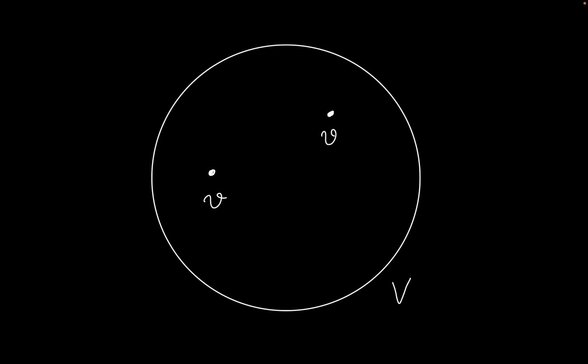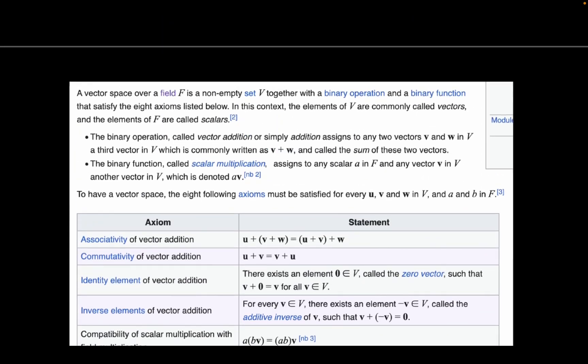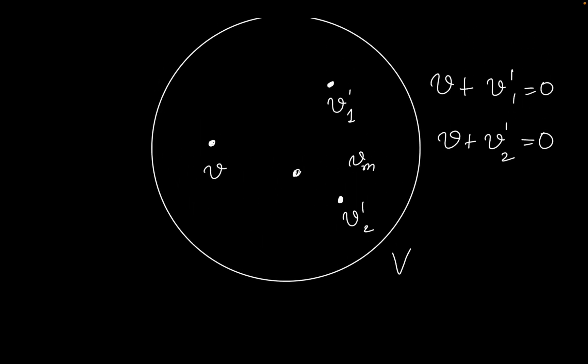Typically we don't call it v', we call it negative v. So v plus negative v equals zero — negative v is treated as a single symbol. What defines the vector space is the existence of such an additive inverse. It guarantees there is at least one additive inverse, but it doesn't directly say how many there are. What's stopping us from considering two inverses, v'₁ and v'₂, such that both v plus v'₁ equals zero and v plus v'₂ equals zero? The definition only guarantees at least one — what's stopping us from having m additive inverses?